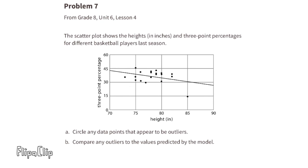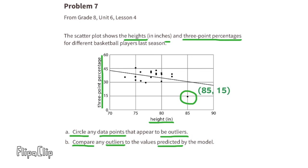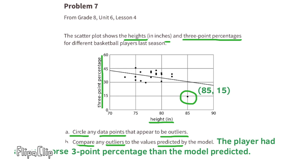Problem 7: From 8th grade Unit 6 Lesson 4. The scatter plot shows the heights in inches and three-point percentages for different basketball players last season. Part A: Circle any data that appear to be outliers. I circled one outlier located at 85 inches and just below the 15 percent mark. Part B: Compare any outliers to the values predicted by the model. This point represents a player who had a significantly worse three-point average than the model predicted, by about 15 percent.